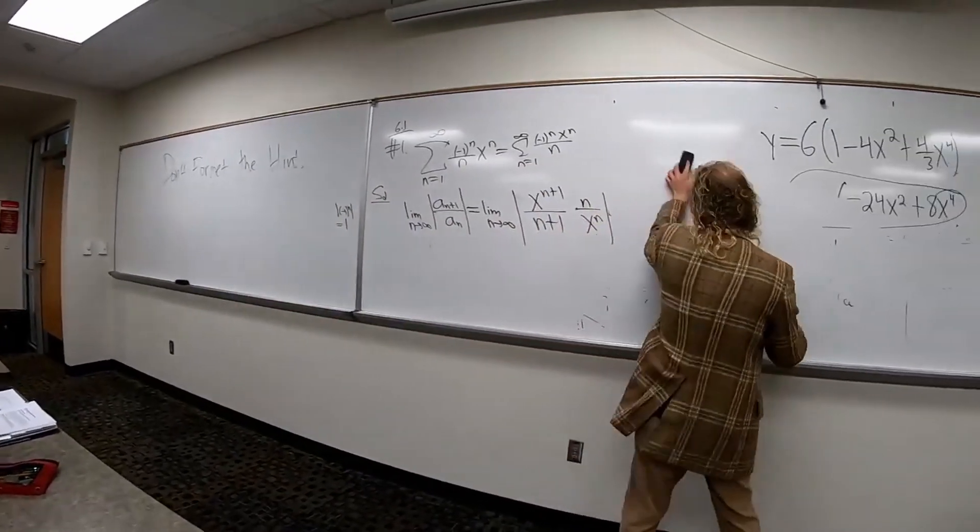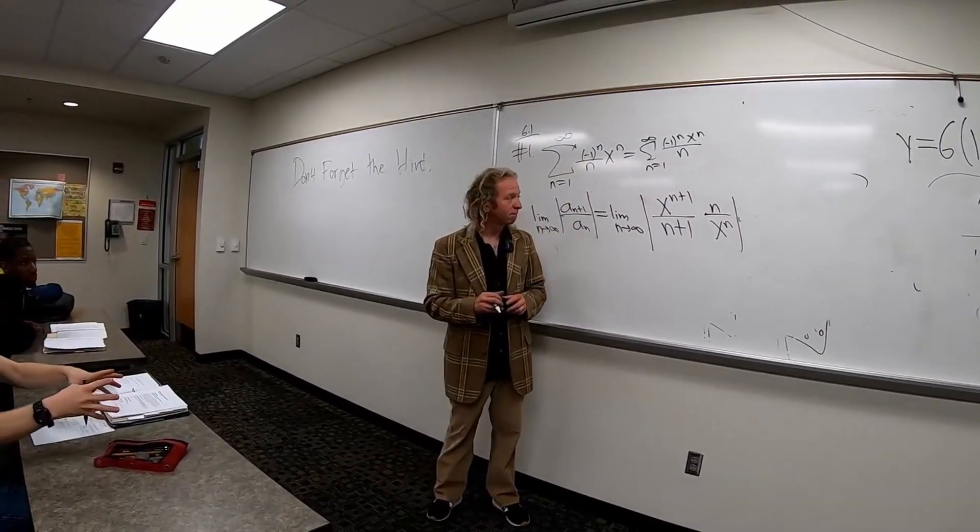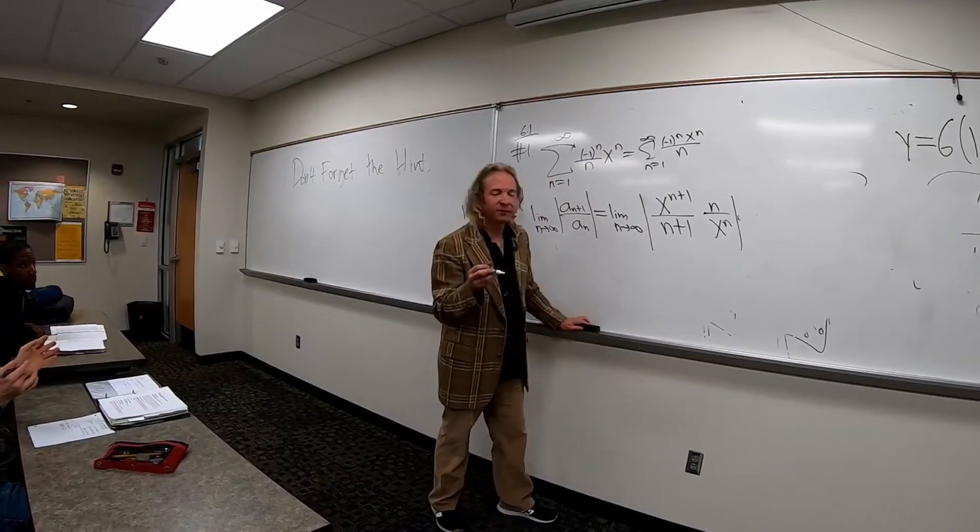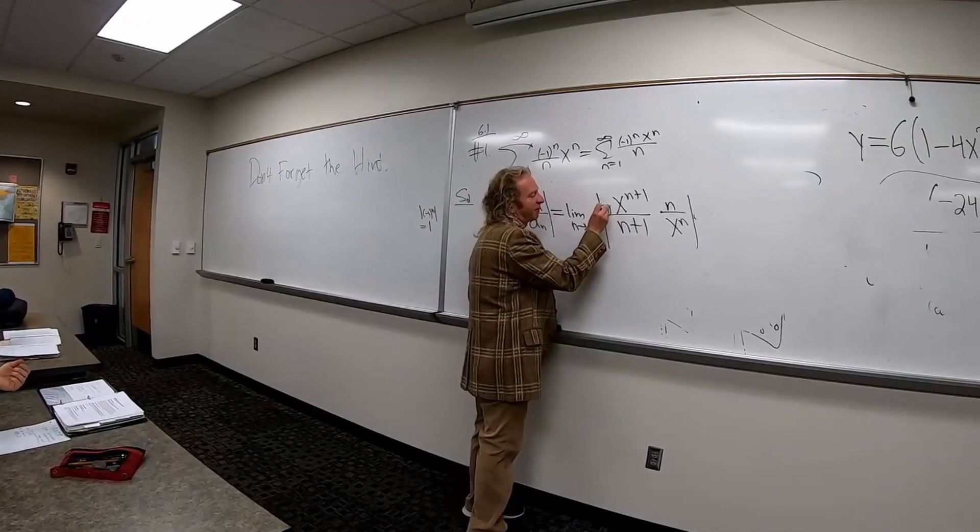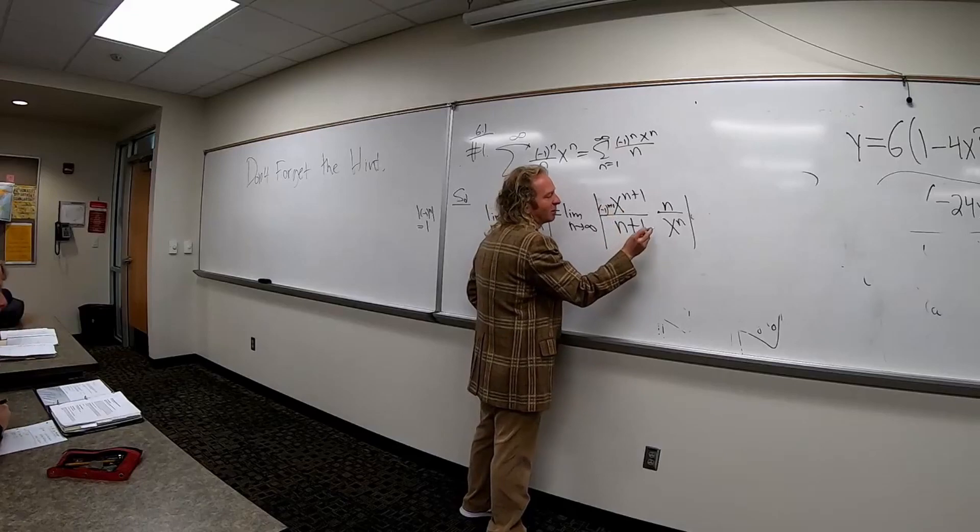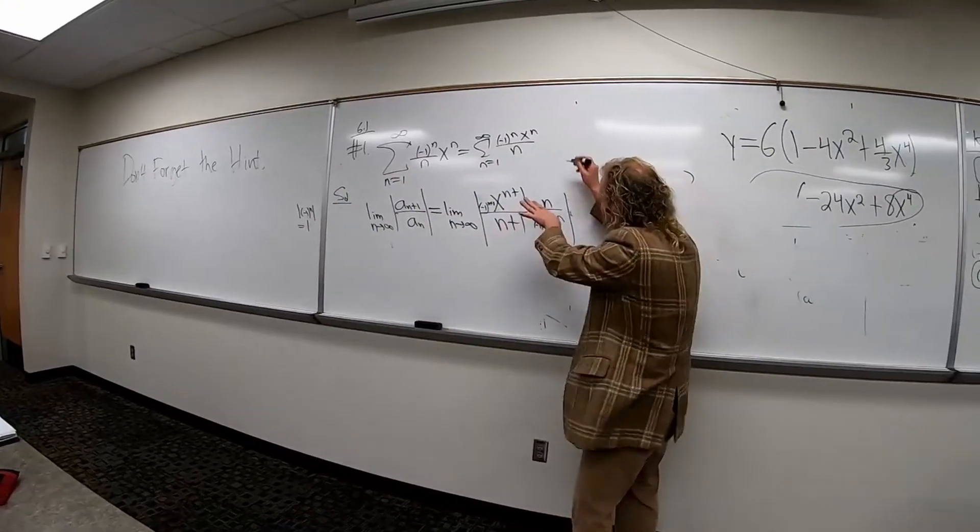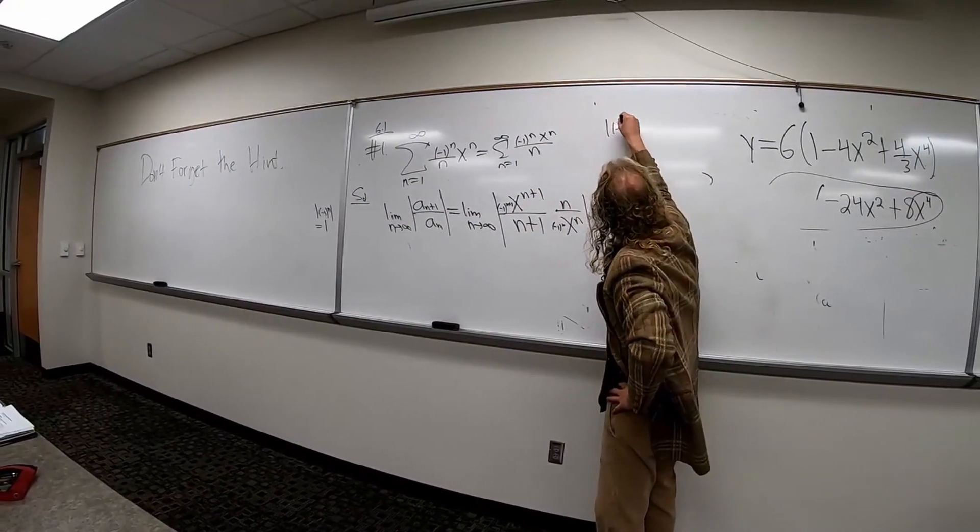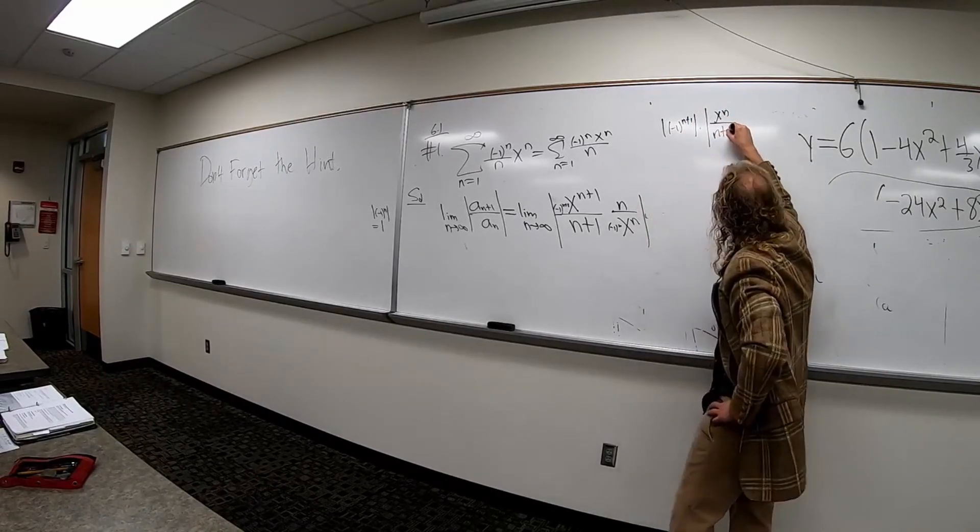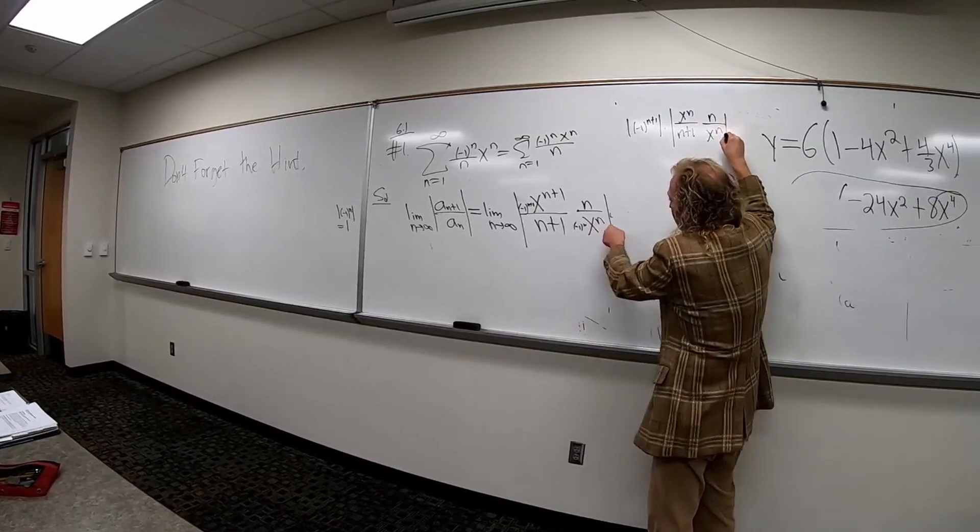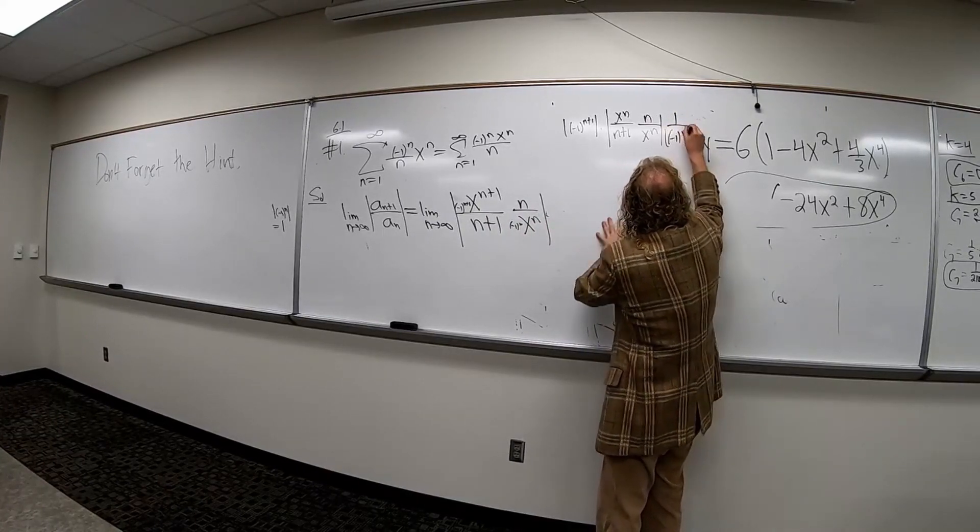If you put in n for the negative 1 to the n power, n plus 1, why did that just go away? Okay. So let me show you. What you can do is you can bring it out of the absolute value like this. And then you can pull it out. You could do this. You could pull it out and you could pull it out. And then when you take the absolute value of this, you're just going to get 1.